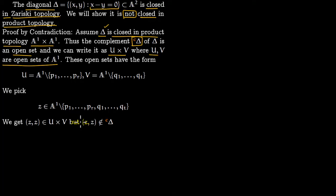Since (z, z) lies on the diagonal, it should not lie within the complement. So finding (z, z) in U times V is the contradiction, because (z, z) should not lie there.